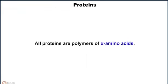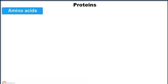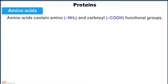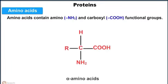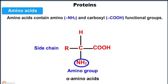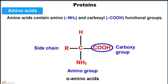All proteins are polymers of alpha amino acids. Amino acids contain an amino group (NH2) and a carboxyl group (COOH) as functional groups.